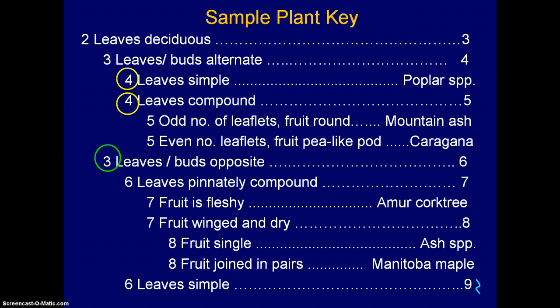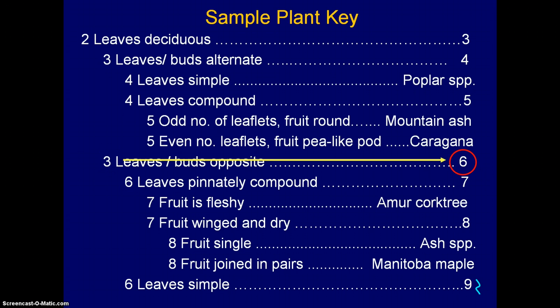Either leaves simple, in which case you've identified it as poplar species, or leaves compound, which means you still aren't done because you go to number 5 and so on. If you look at the other number 3 that we were directed to earlier, you'll see that it directed you to leaves/buds opposite, and this then directs you to more choices to number 6 — that's the next number available in the key when it's being constructed. And number 6 will simply direct you to two possible choices of number 6, either compound leaves or simple leaves, and so on.